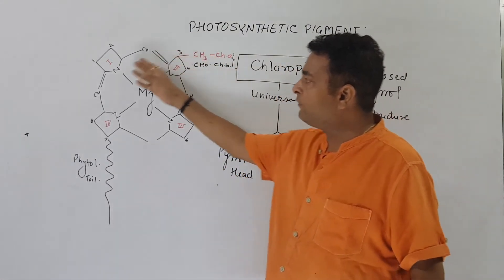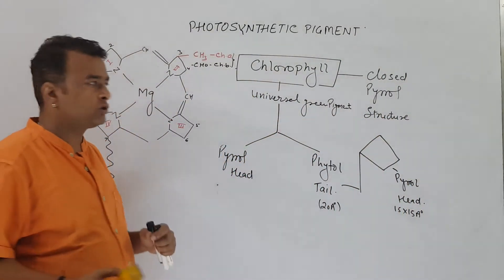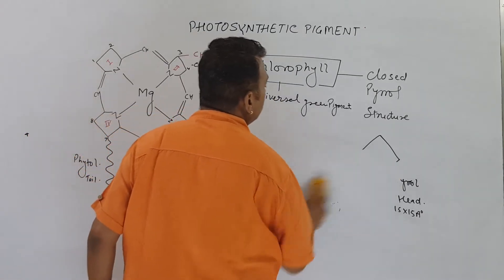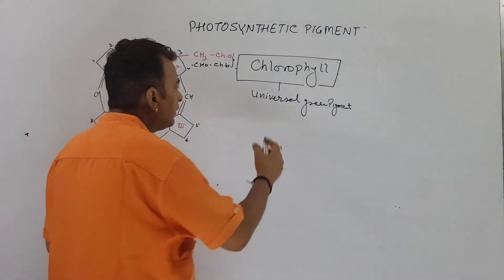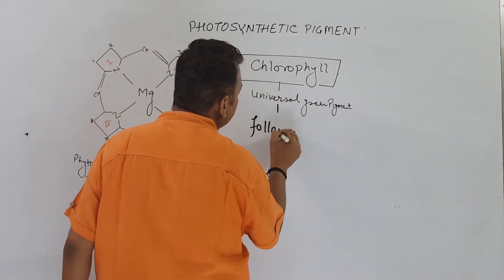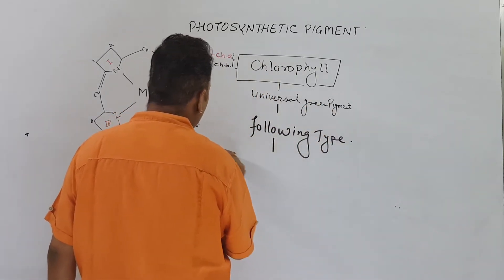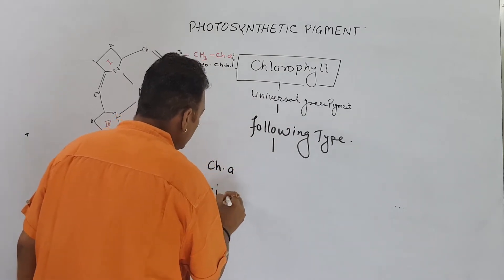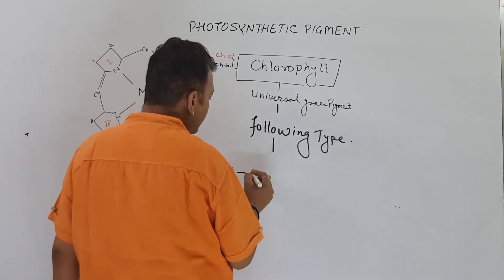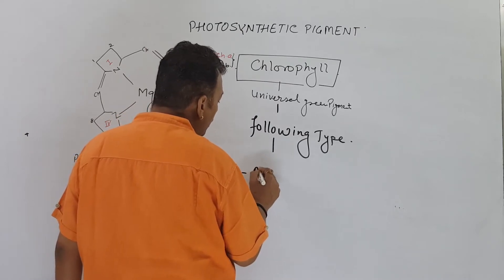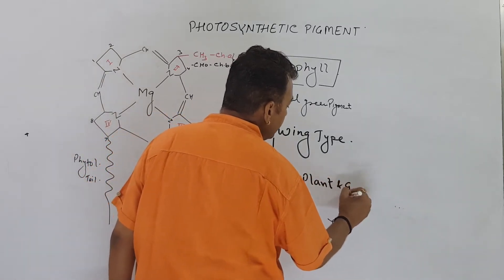These chlorophyll molecules have a phytol chain and are organic solvent-soluble, not water-soluble. These chlorophyll molecules are generally of following types: chlorophyll A, chlorophyll B, chlorophyll C. Chlorophyll A is present in all green plants and all algae.